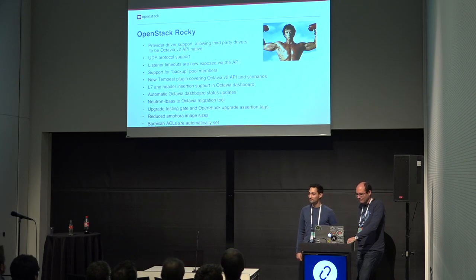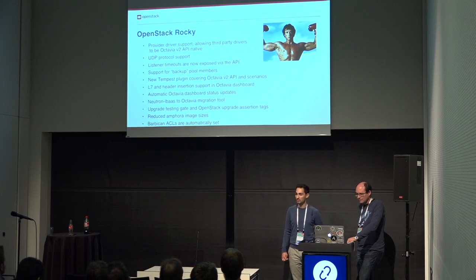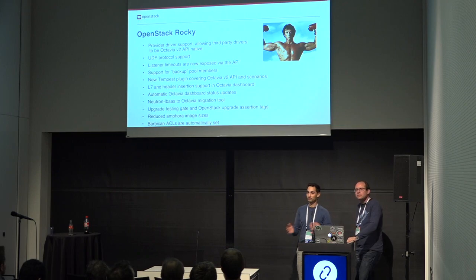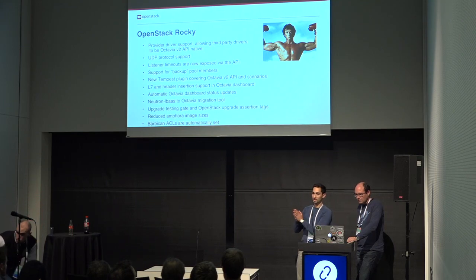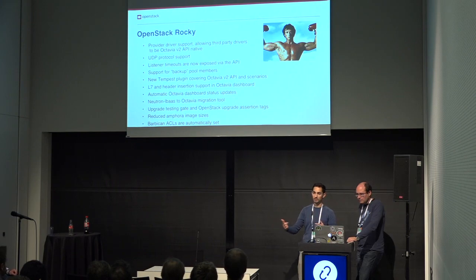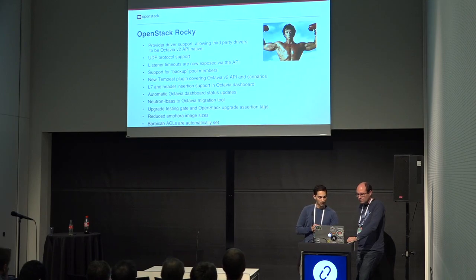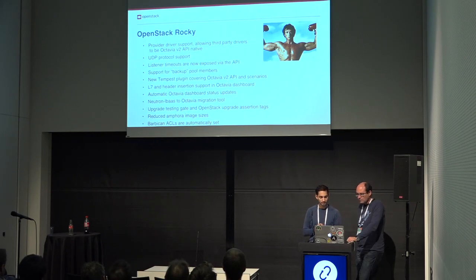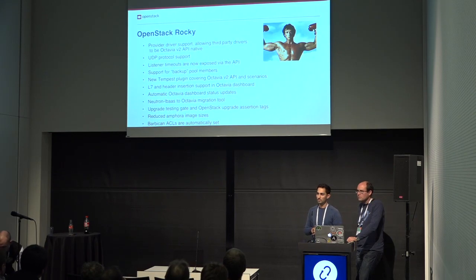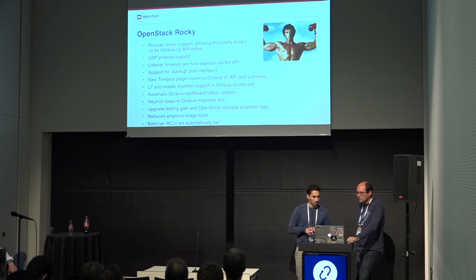The next one is the migration tool — we presented this yesterday and there is a video recording in case you missed it. There is a migration tool from Neutron LBaaS to Octavia. You can migrate your load balancers, and you can even migrate from the namespace driver or the Haproxy driver to the Amphora driver — so a cross-provider migration between those two. We also have a new Grenade job for testing upgrades, asserting with the two upgrade tags in OpenStack. We also reduced the Amphora image size for the Ubuntu-based Amphora image.